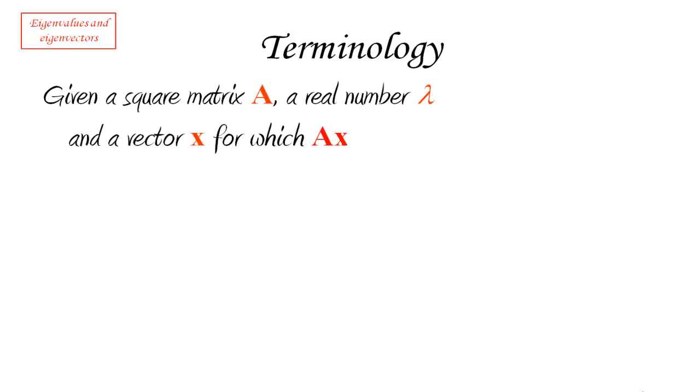It's time now to give you the terminology and introduce again these words eigen-whatever. So given a square matrix A, a real number lambda, and a vector x for which Ax equals lambda x.